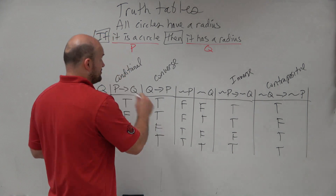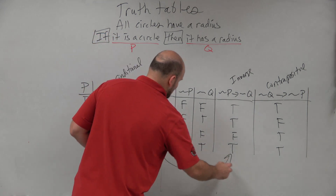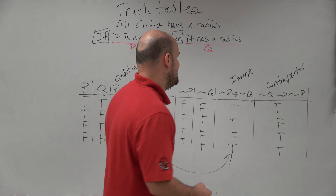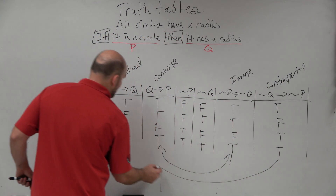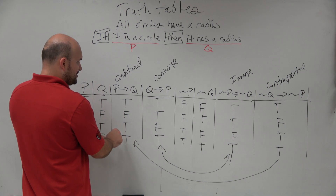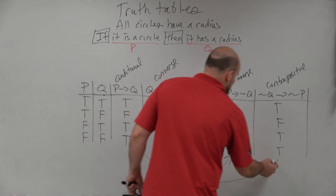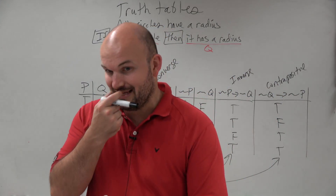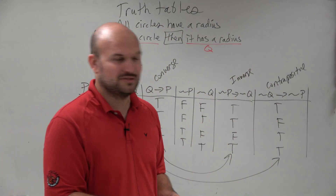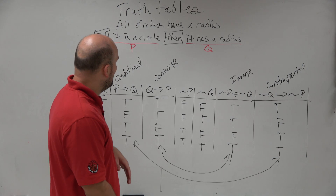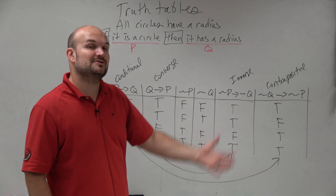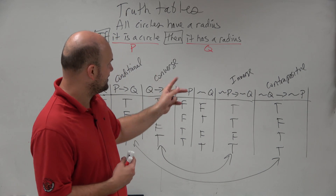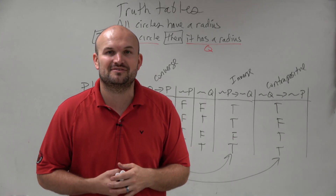The inverse and the converse are logically equivalent, meaning their truth tables are exactly the same. Likewise, the contrapositive and the conditional are also logically equivalent and share the same truth table. That is how and why we use truth tables, and that is the truth table for your conditional, converse, inverse, and contrapositive.